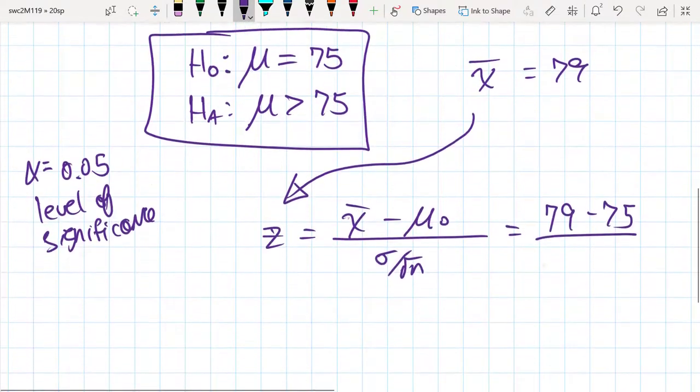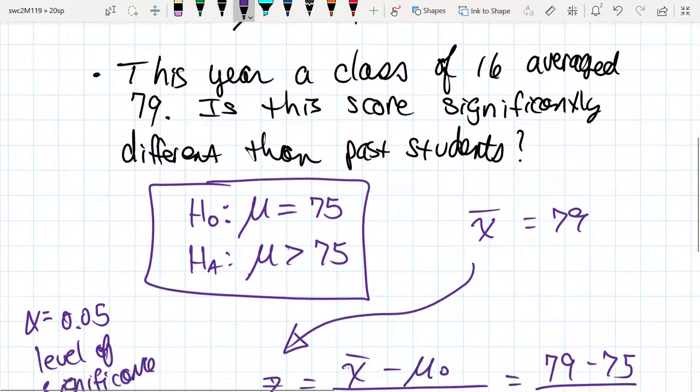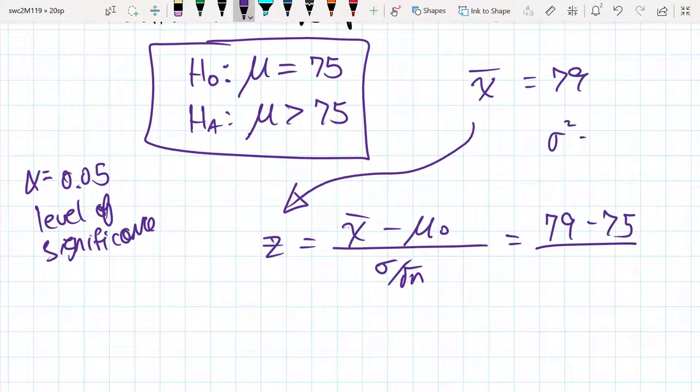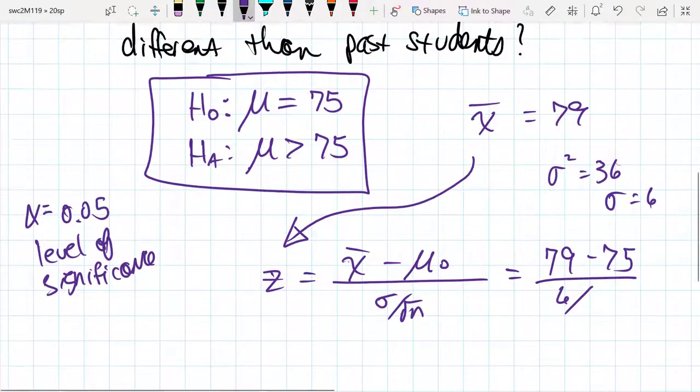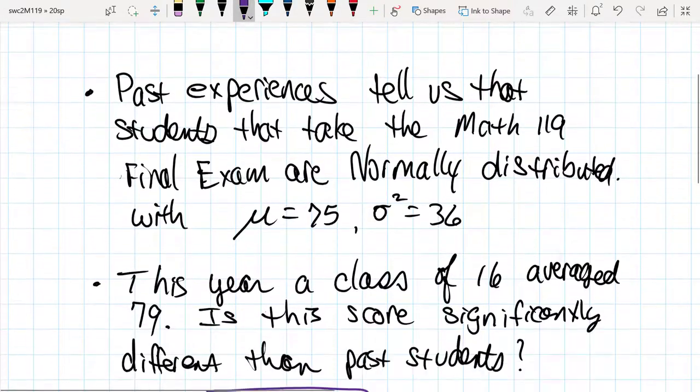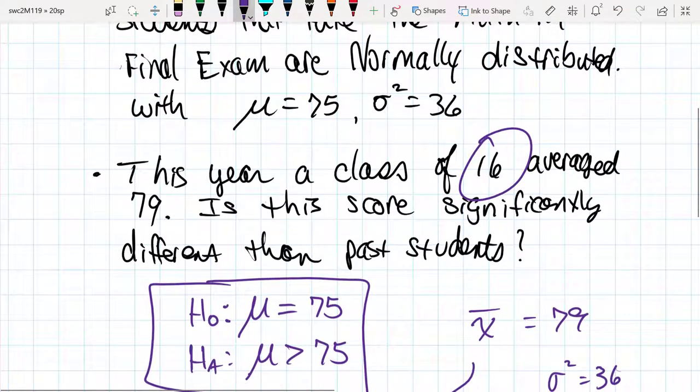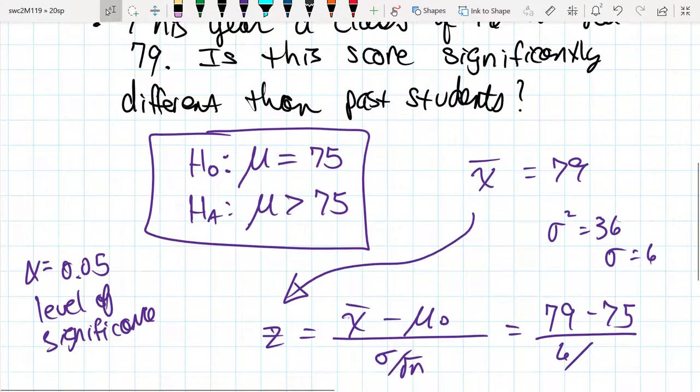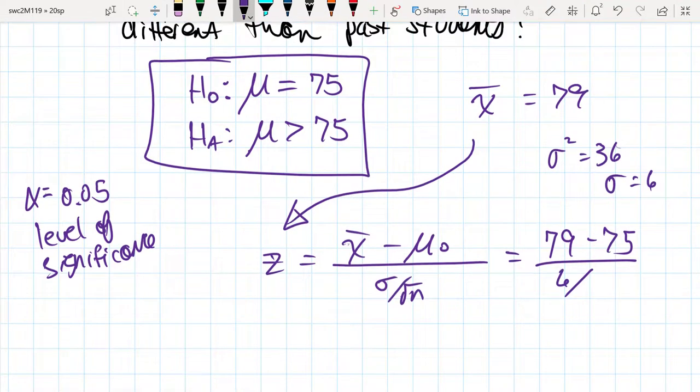The standard deviation: we know that σ² is 36, so that means σ is 6, divided by the square root of the sample size. The sample size was 16, so the square root of that is 4.